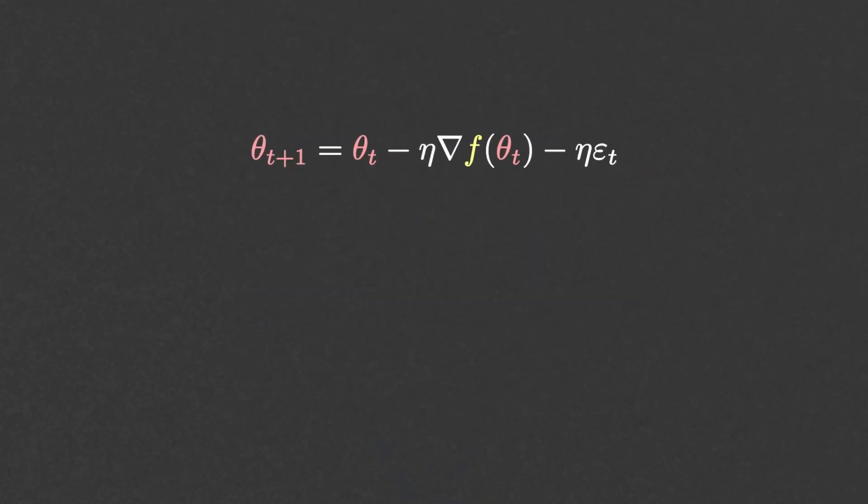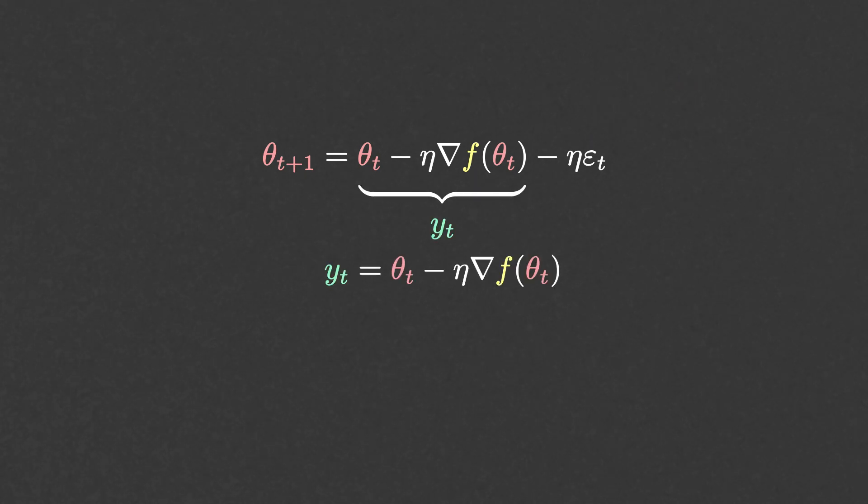If you look at one iteration of Stochastic Gradient Descent, and you perform this change of variables, then you can rewrite the iteration of Stochastic Gradient Descent as follows.